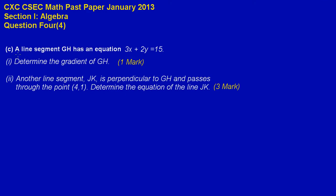Hey guys, now let us look at the solution to question 4 part C. Here it states a line segment GH has an equation 3x plus 2y equal 15. Part 1, they're asking us to determine the gradient of GH.